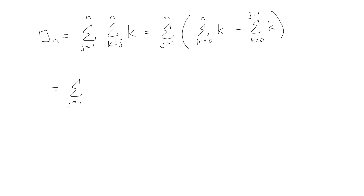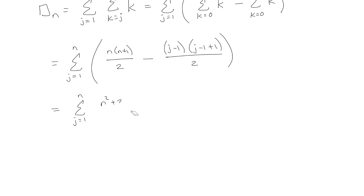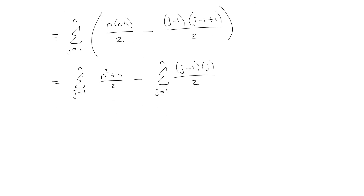So I'll leave the outer sum: j going from 1 to n. The inner sum from 0 to n of k becomes n(n+1)/2. Then minus (j−1)(j−1+1)/2. After distributing, I get (n²+n)/2 summed over j. Since n²+n is independent of j, it can be pulled out of the summation — just like pulling a constant out of an integral. So I have (n²+n)/2 times the sum from j=1 to n of 1, plus a remaining piece.